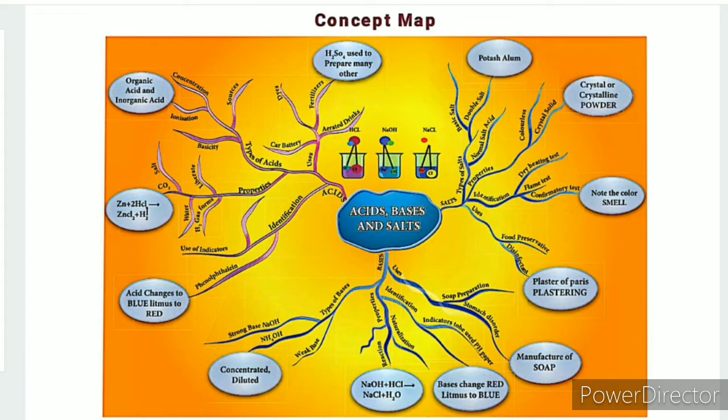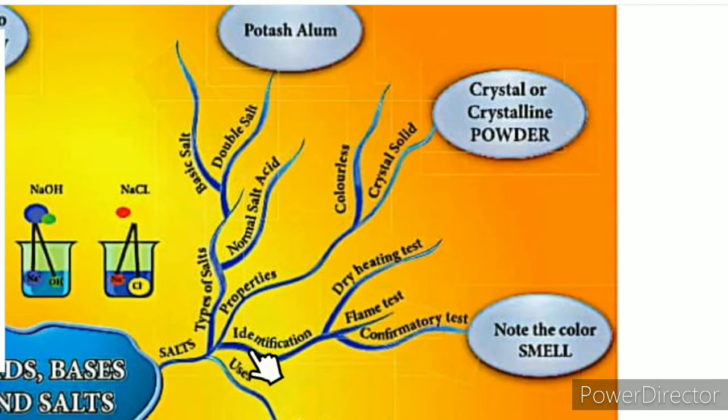Concept map: In this lesson, a total of 5 topics are given — acid, base and salt. Salt is the 5th topic. We have already covered types of salts and their properties. Today we will look at identification and uses.